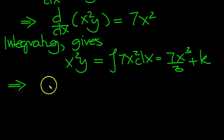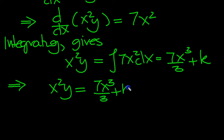That implies then, x squared y is equal to 7x cubed over 3 plus k. So, there's our answer. But we can divide by x squared to get just y on its own.